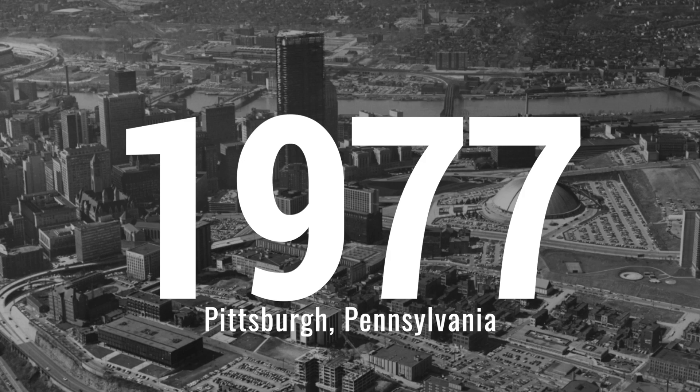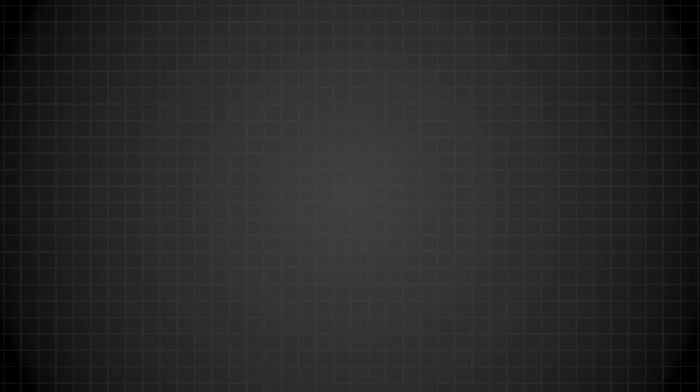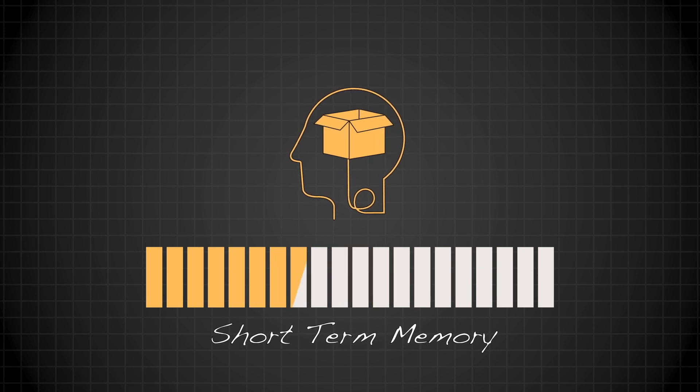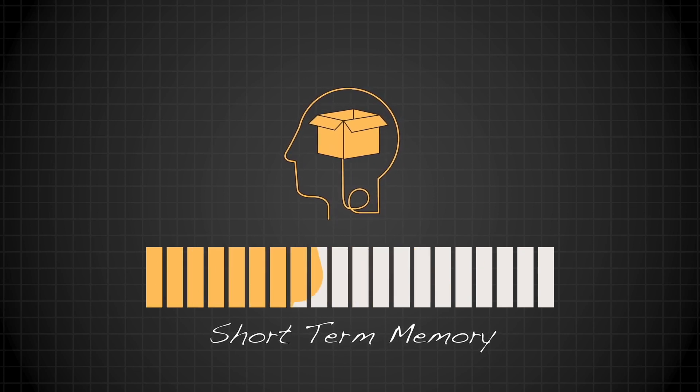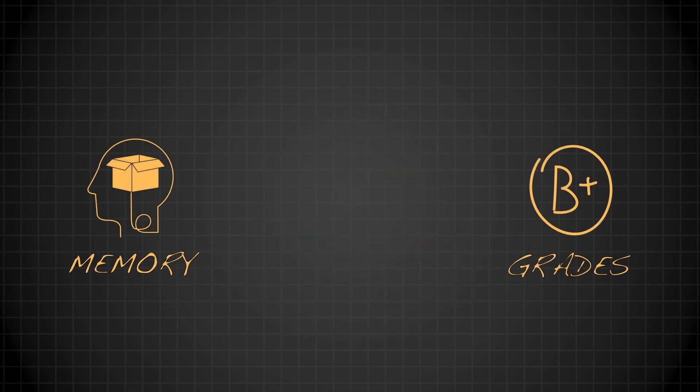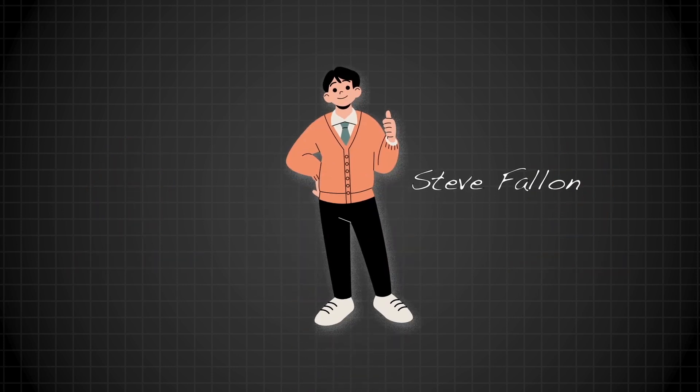In 1977, when Anders Ericsson was a researcher at Carnegie Mellon University, he and his colleague Bill Chase were running an experiment to test the limits of short-term memory. They were looking for an undergraduate student with average grades and average memory abilities, so they recruited Steve Fallon.